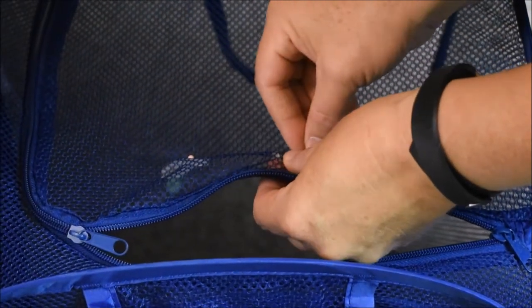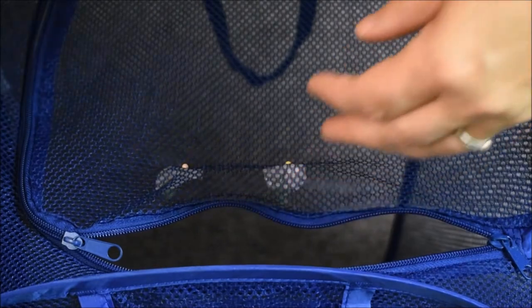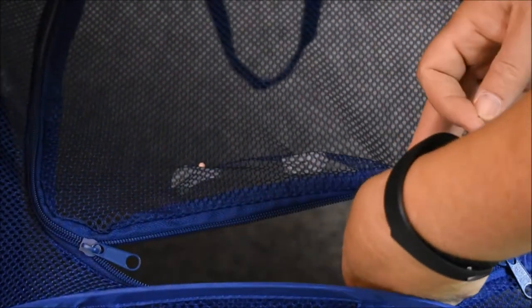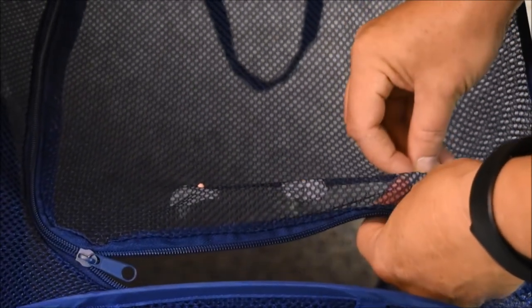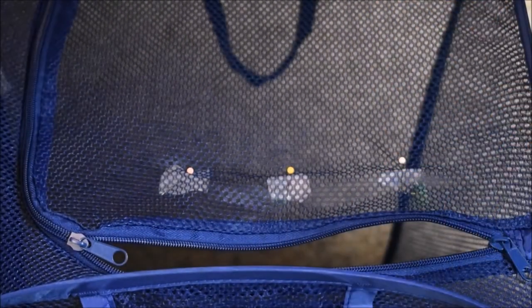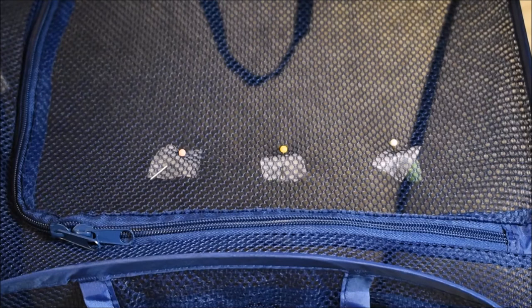But I love this method because I'd rather have them eclose in this mesh container. Because if they were to fall, they would just climb right up the side of the container and all would be well. So I hope this helped you. It's really quite easy. No need to use hot glue, just tape and pins.